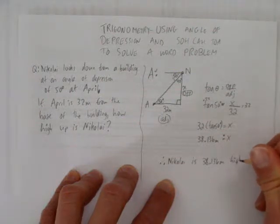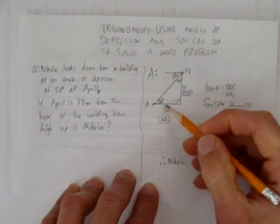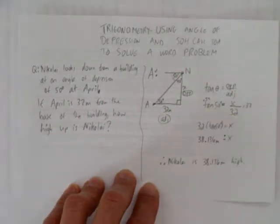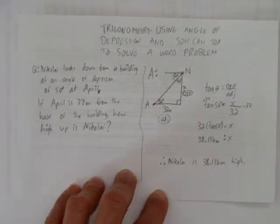So, what did we do here? We used the angle of depression to find an angle inside the triangle, and then we used SOHCAHTOA to solve this word problem.